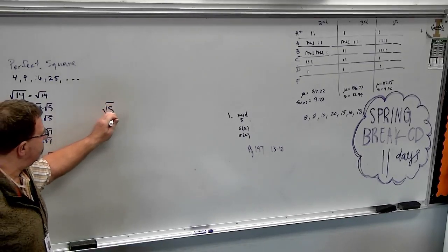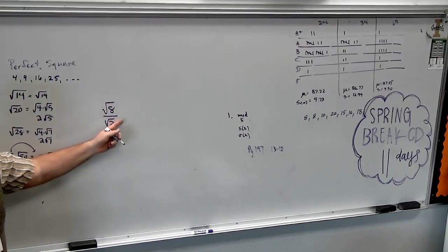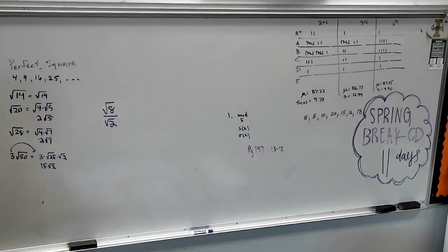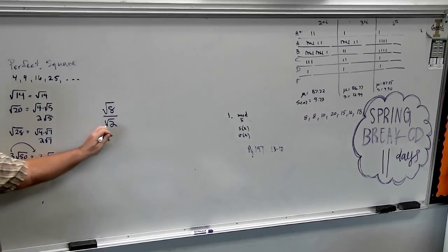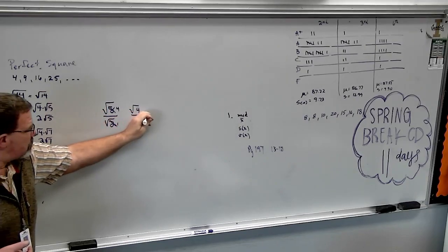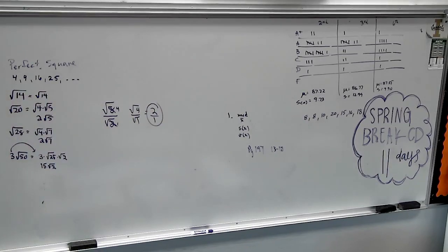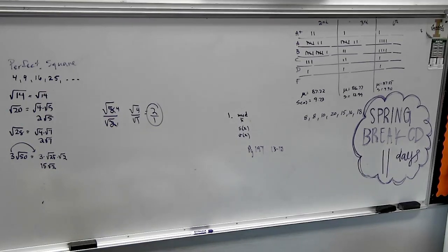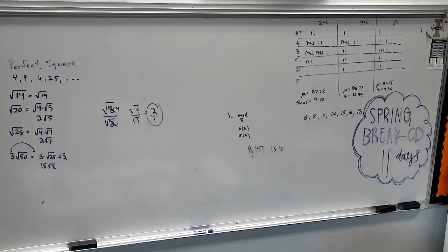If I gave you a problem like root 8 over root 2, by definition we're supposed to multiply top and bottom by root 2, but can I pre-reduce first? Does 2 go into 8 evenly? That's just root 4 over root 1 — 8 divided by 2 is 4. My answer is 2. I didn't even have to work with radicals. You'll notice on your worksheet, problems 15 through 18 are ones you could pre-reduce to make it easier. We'll talk about rationalizing tomorrow. Today we're going to talk about the Pythagorean theorem.